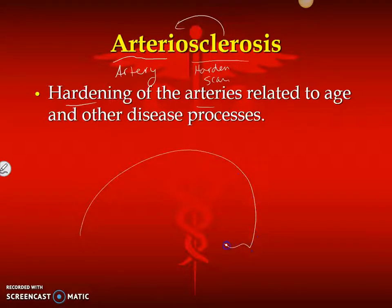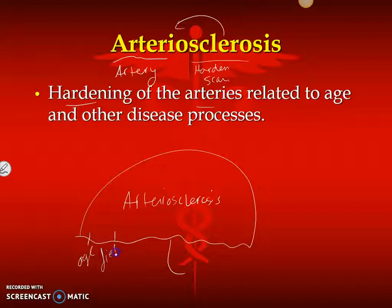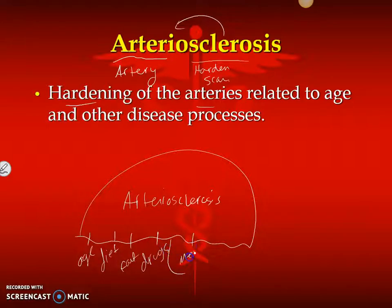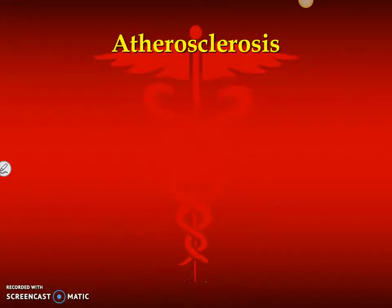I always teach arteriosclerosis as an umbrella. Arteriosclerosis is anytime the arteries will harden, and they can harden due to age, diet, fat, drugs, medication, or genetics. There are so many different things that can cause arteriosclerosis, but we're only going to talk about one — fat. And that is called atherosclerosis. Atherosclerosis is a form of arteriosclerosis, but it's caused by fatty deposits.